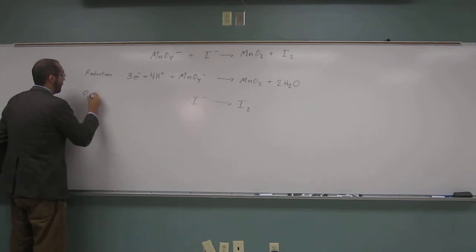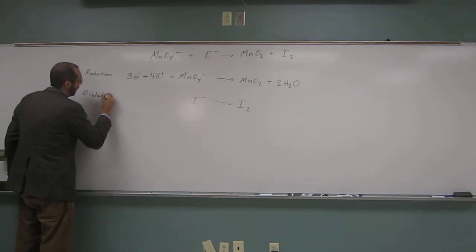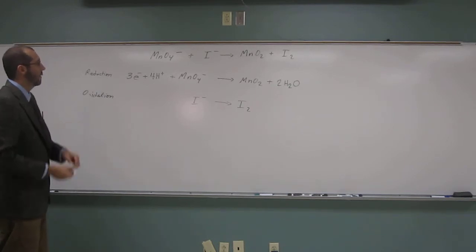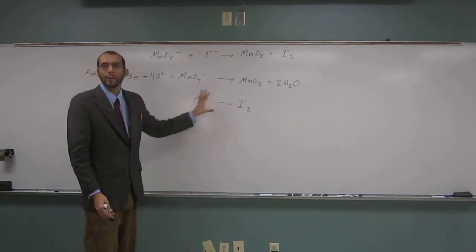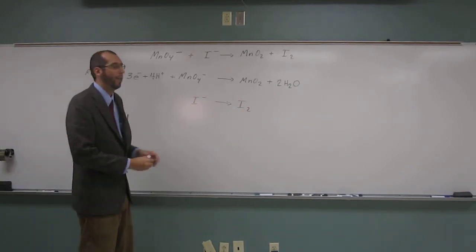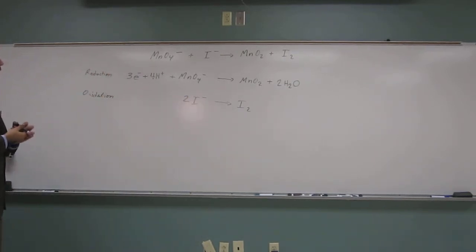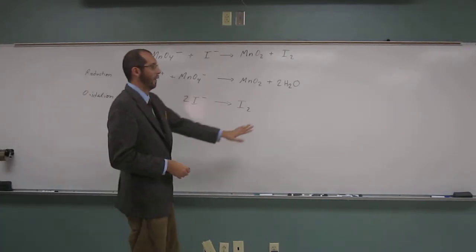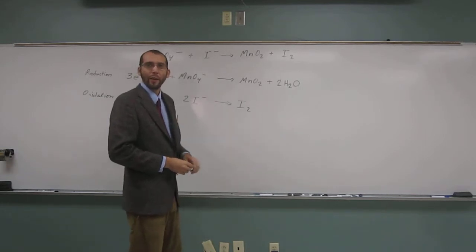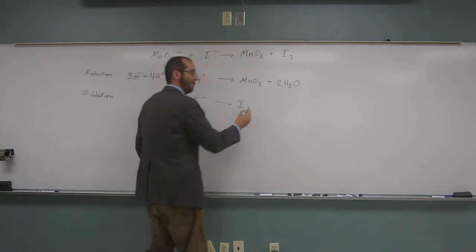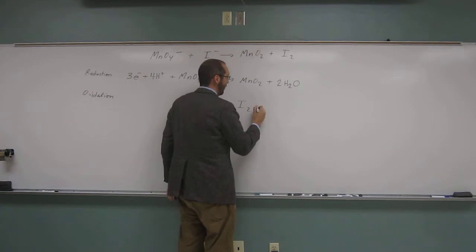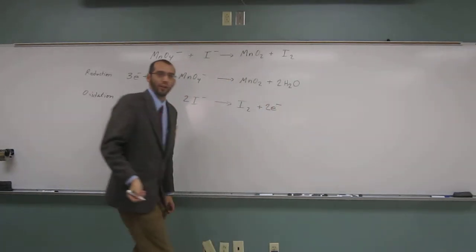So that must mean this is the oxidation half-reaction. First thing we have to do is balance the atoms. We don't have enough iodine on this side. There's no O's to worry about, there's no H's to worry about, so we don't have to do that, but our charges aren't balanced. So what are we going to have to do? Add electrons. How many of them? Two. Two electrons.